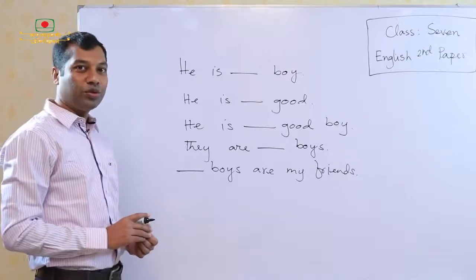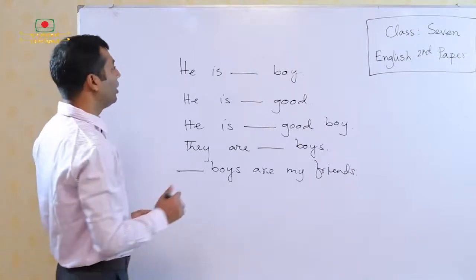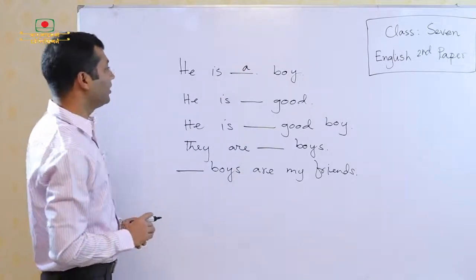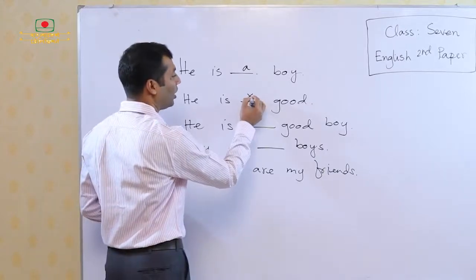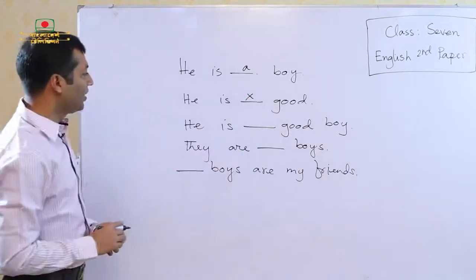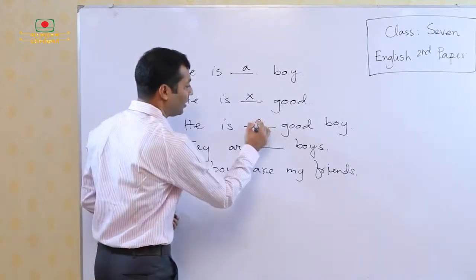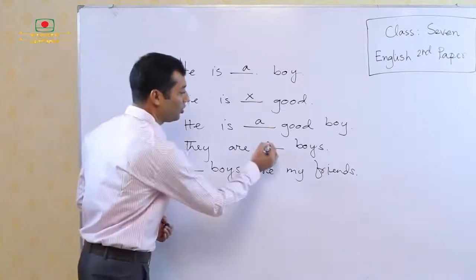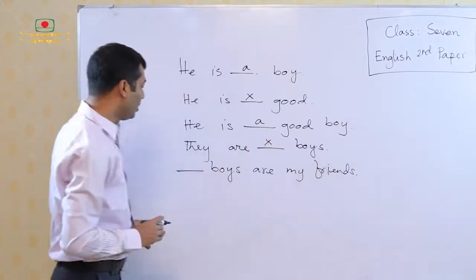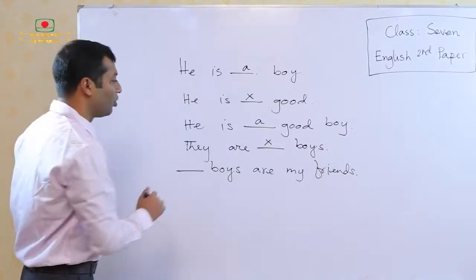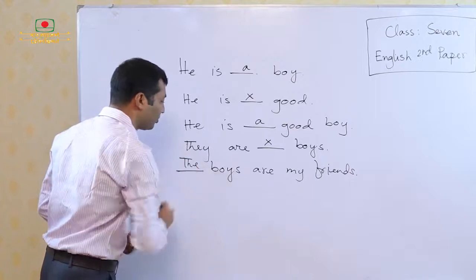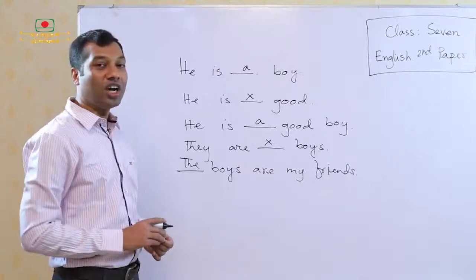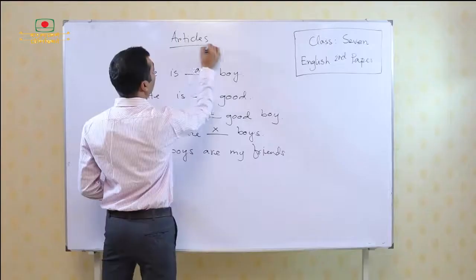So if I ask you to fill in the blanks, what will you do? You will use 'a' here — he is a boy. And in the next sentence, he is good, so there will be no word, so it will be a cross. In the next sentence, he is a good boy. Come to the fourth sentence, they are boys — no article will be used. And in the fifth sentence, the boys are my friends. So students, you can easily understand that what we are going to learn today. Yes, we are going to learn articles.